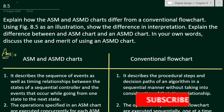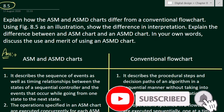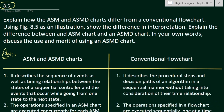In this video we'll solve problem number 8.5 from chapter 8. The problem is to explain how the ASM and ASMD charts differ from the conventional flowchart. We have to find the difference between ASMD chart and ASM chart — one type of chart versus another — and specifically find the difference between ASM chart and flowchart. In the second part of the problem we have to use figure 8.5 as an illustration to show the difference in interpretation.